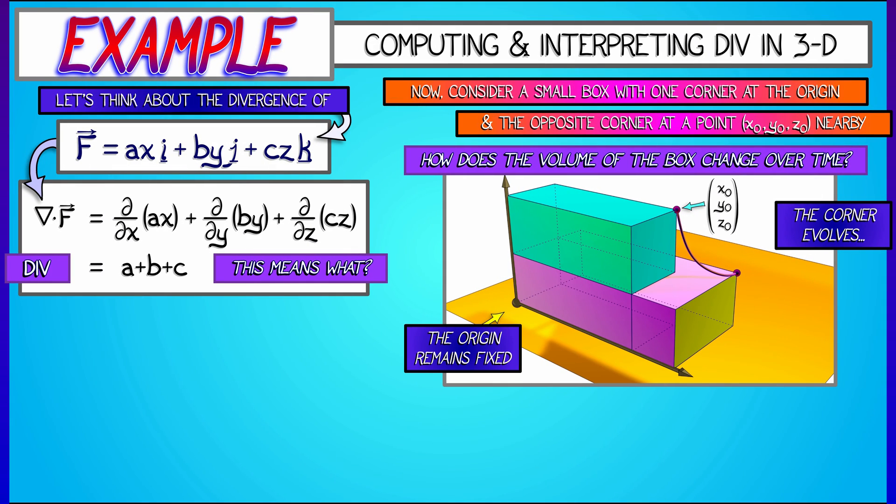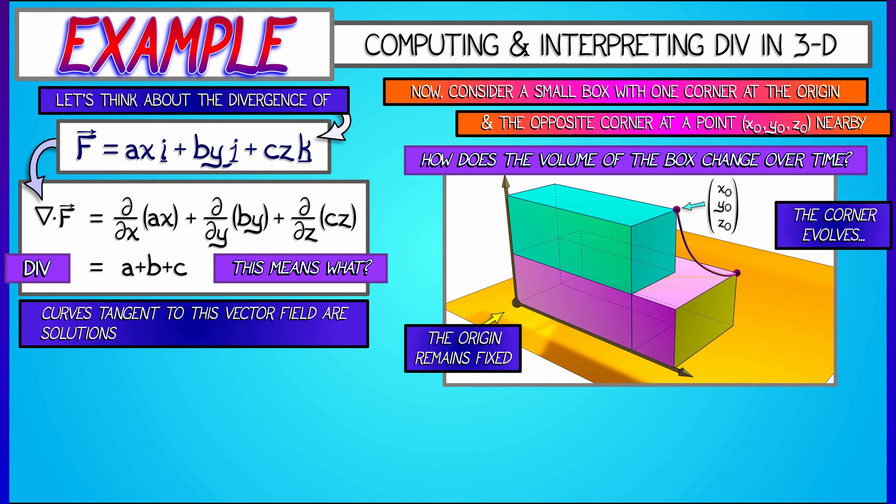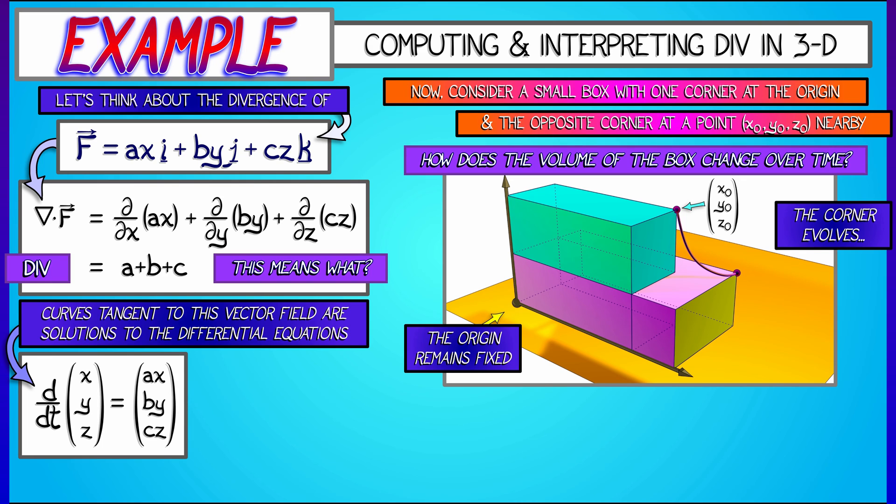Now let's think about this a bit more carefully. The curves that are tangent to the vector field are solutions to the differential equations where dx/dt is a times x, and dy/dt is b times y, and dz/dt is c times z. Now think back. Think way back to single variable calculus when you learned how to solve such simple, linear, ordinary differential equations.